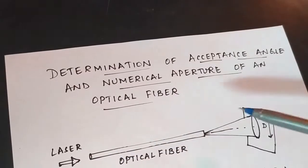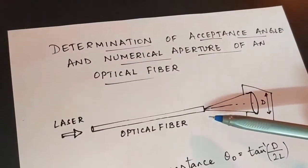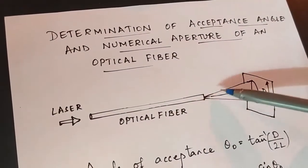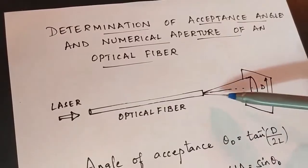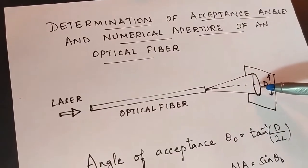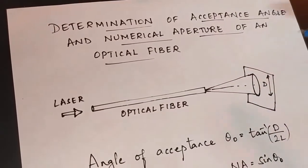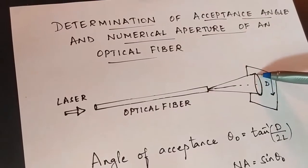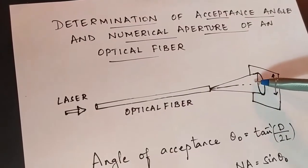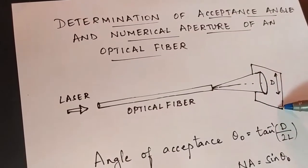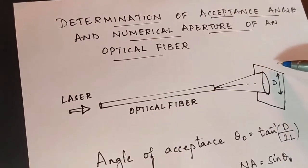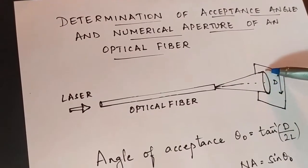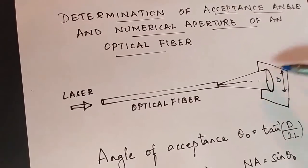We know that the light when it is emerging out of an optical fiber, it emerges out in the form of a cone. This cone of light — this circle of light — is projected onto the screen where a graph sheet is placed, and we mark this circle.